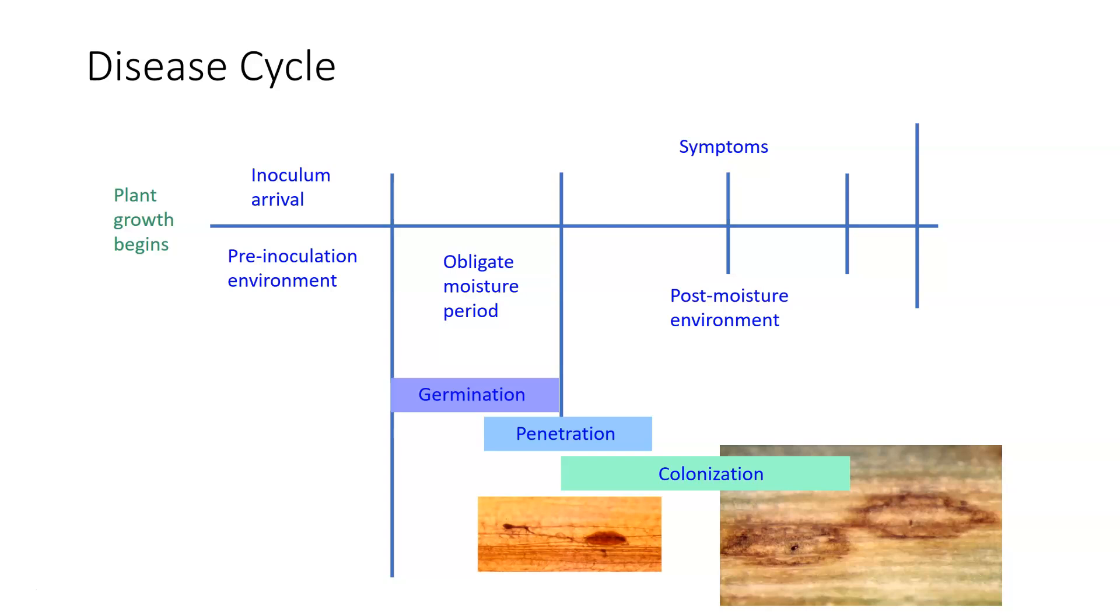During that time we are going to get symptom development. You can see in this particular picture you've got some symptoms developing on this tissue. Then we get sporulation, and when we get sporulation, that is going to cause the formation of inoculum that is going to be released and dispersed. It will deposit itself back on susceptible living tissue, hopefully, and we start the process all over again. This is a disease cycle.